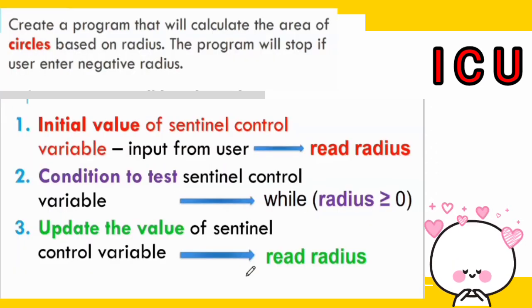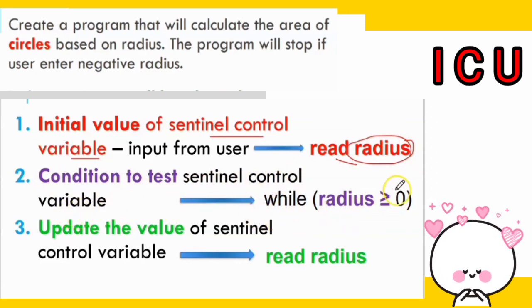Applying the three guidelines to the second question: the initial value of the sentinel control variable is input from the user — read radius. The condition to test is the sentinel control variable value. The third guideline is to update the sentinel control variable — again, input from user, read radius. Remember these three guidelines: initial value, condition to test, and update the value.